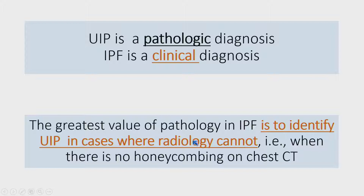If you ever hear a biopsy diagnosis of IPF, that's absolutely incorrect — that just cannot be done. IPF, or idiopathic pulmonary fibrosis, is a diagnosis that clinicians make after taking into account the biopsy findings, the radiologic findings, and whatever else they know from the clinical history, putting it all together to conclude that the disease is idiopathic. Whether they're accurate or not is a different question, but the diagnosis is based on a clinical summation of everything together.